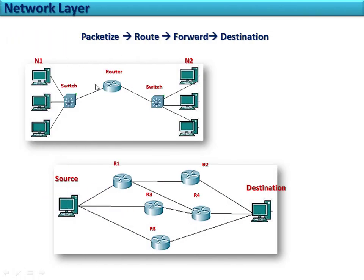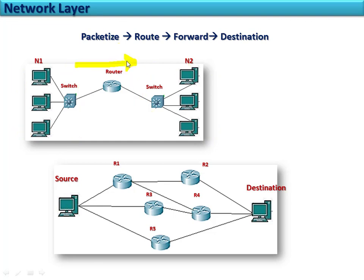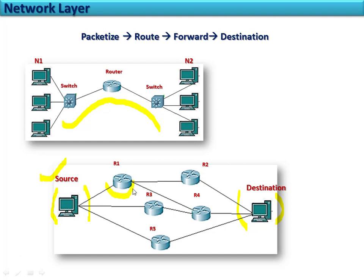This inter-network device, the router, connects several networks. Network N1 has a group of devices connected together, and another network is connected far away. These two different networks need to communicate, so the router is used in between and guides the packet to move further. The packet from the source may travel any route, and the duty of the router is to find the best route to forward to the destination and reduce cost.